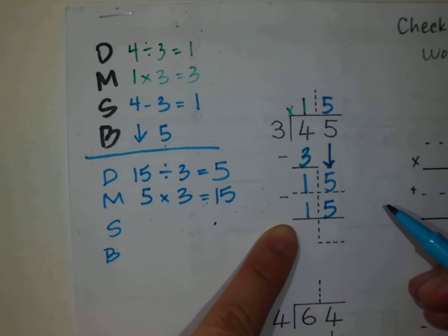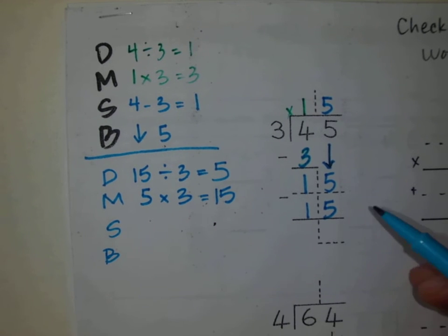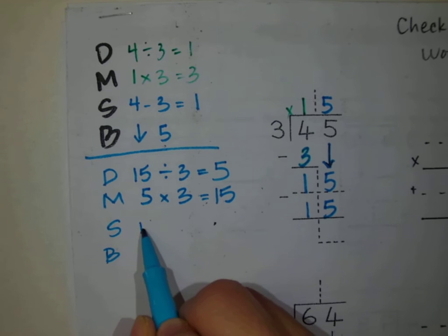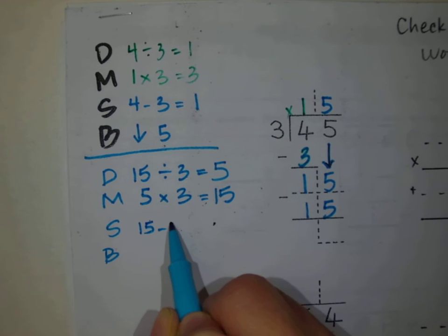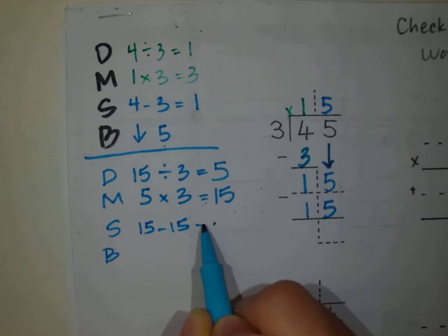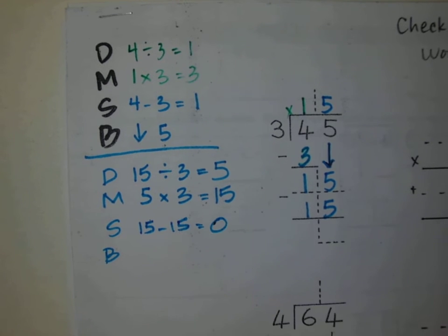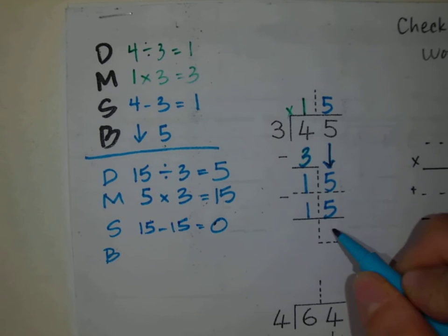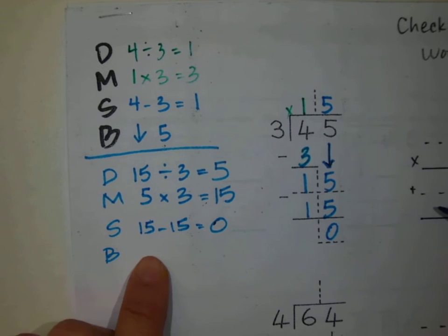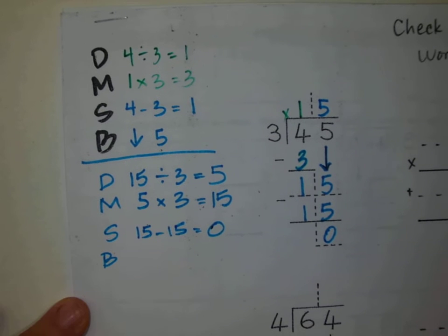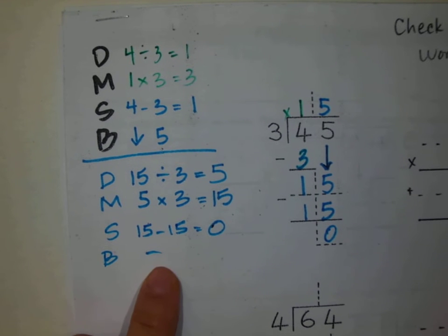Next, sister subtract. 15 minus 15 equals 0. Does brother have anything to bring down? No, nothing to bring down.